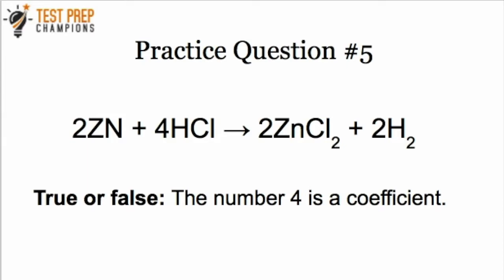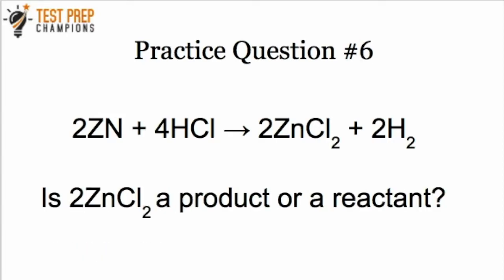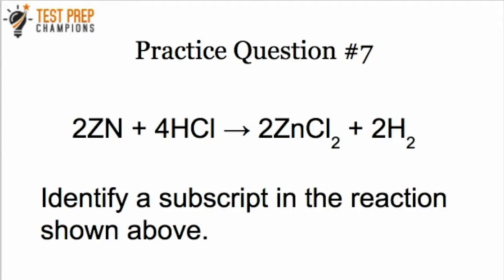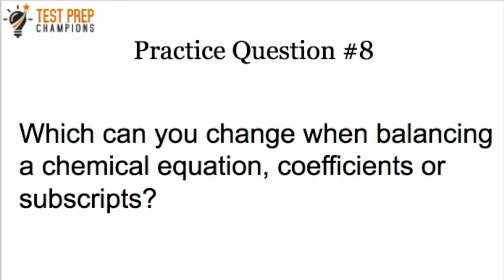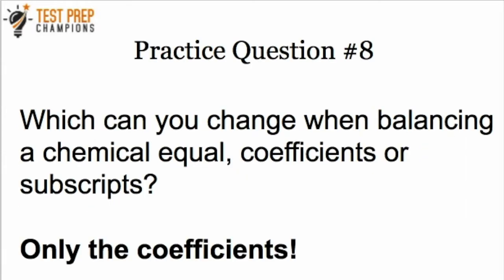True or false: the number 4 is a coefficient. The answer is true. Next: is 2ZnCl2 a product or a reactant? The answer is that 2ZnCl2 is a product. Identify a subscript in the reaction shown — the correct answer is 2. Practice question 8: which can you change when balancing the chemical equation — the coefficients or the subscripts? The correct answer is only the coefficients. Remember that as we move forward.